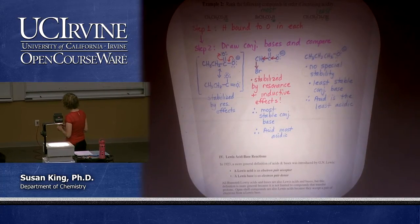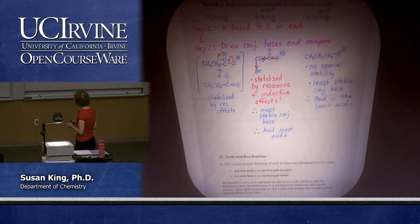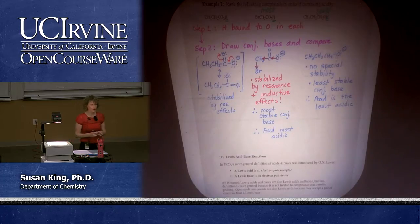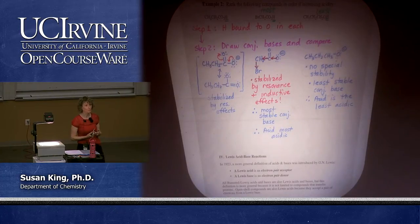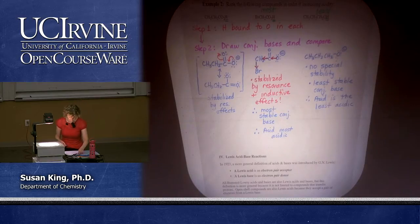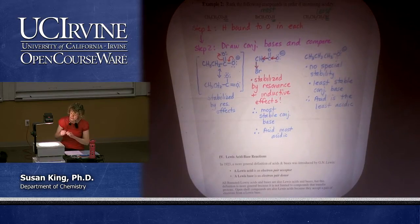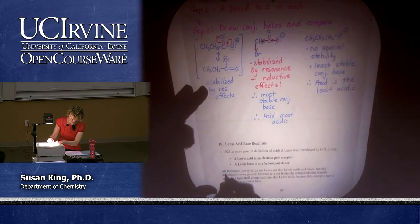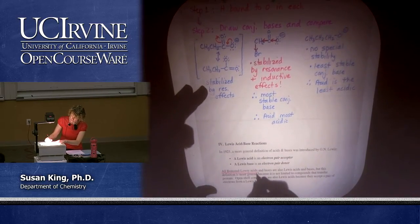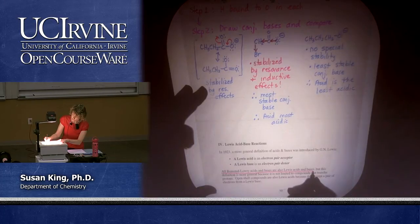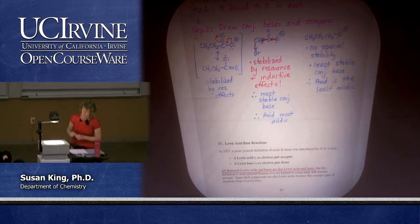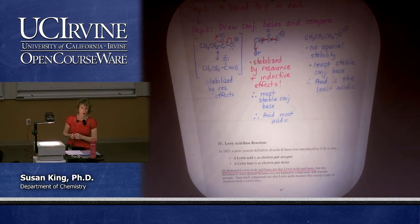A Lewis acid is an electron pair acceptor and a Lewis base is an electron pair donor. There can be other acids that don't have a proton to donate — those would be Lewis acids but not Brønsted acids. All Brønsted-Lowry acids and bases are also Lewis acids and bases, but the converse is not true — not all Lewis acids are Brønsted acids.